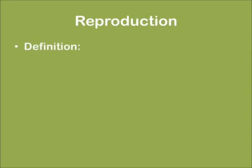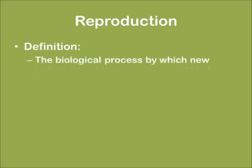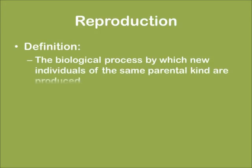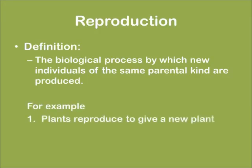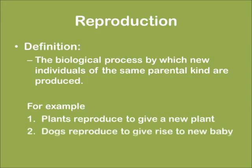Coming to reproduction, it is a biological process by which new individuals of the same parental kind are produced. For example, plants reproduce to give a new plant, and dogs reproduce to give a new baby dog or puppy.